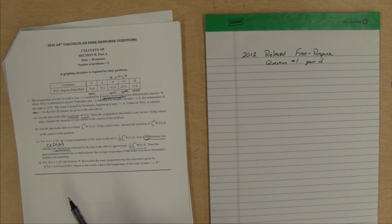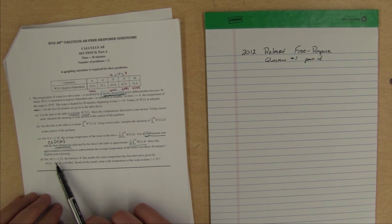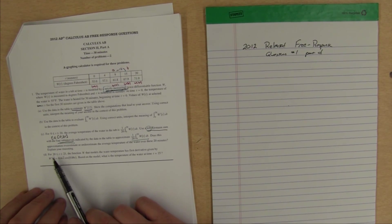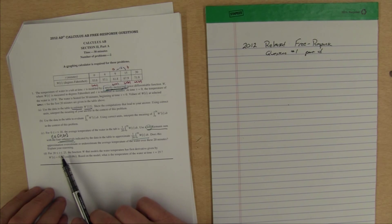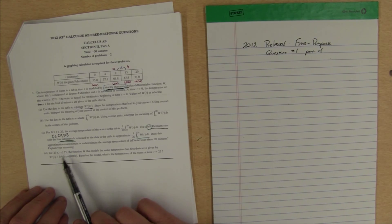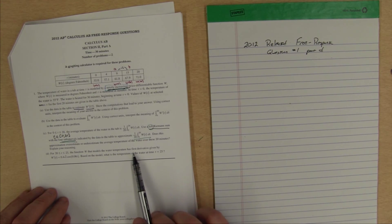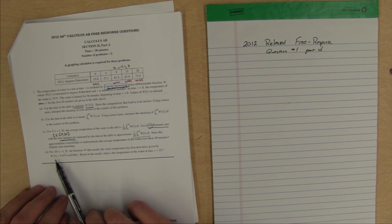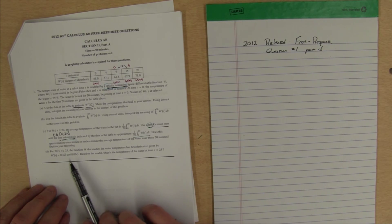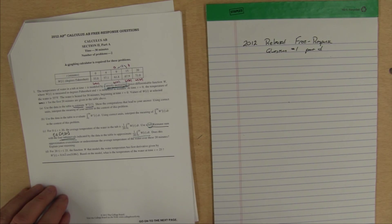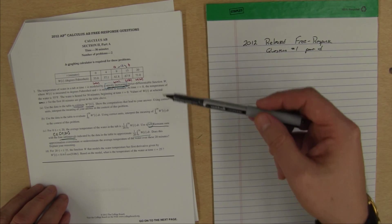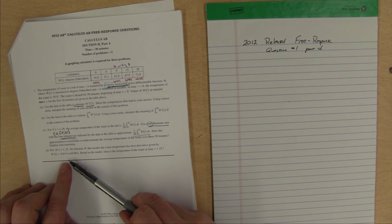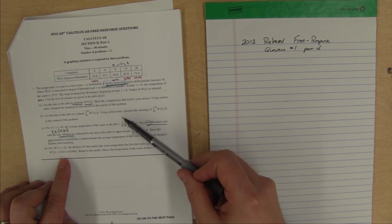In part D it says for 20 less than or equal to T less than or equal to 25, we want to say for T between 20 and 25 including the endpoints. The function W that models the water temperature has derivative given by W prime of T. Now they've finally given us a function.